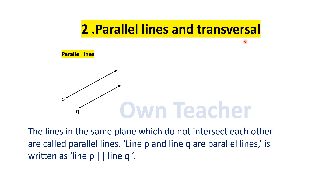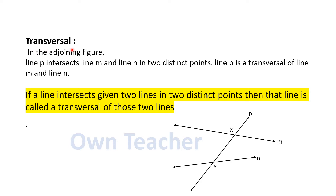Parallel Lines and Transversals. Now we will see Parallel Lines. This is Line P and Line Q. The lines in the same plane which do not intersect each other are called Parallel Lines. Line P and Line Q are Parallel Lines. It is written as Line P parallel to Line Q.